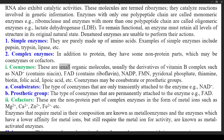Coenzymes may be co-substrates or prosthetic groups. (A) Co-substrates — the type of coenzymes that are only transiently attached to the enzyme; e.g., NAD⁺. (B) Prosthetic group — the type of coenzymes that are permanently attached to the enzyme; e.g., FAD.